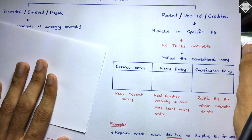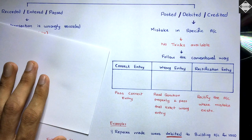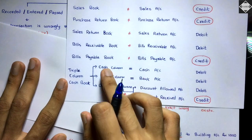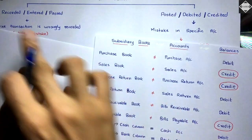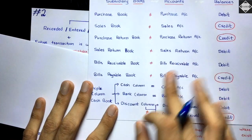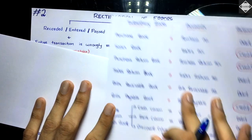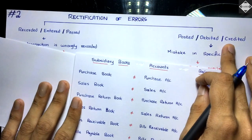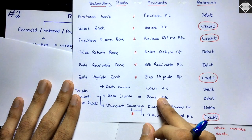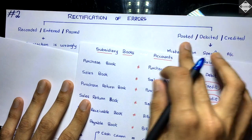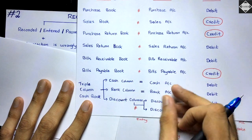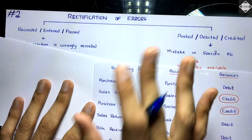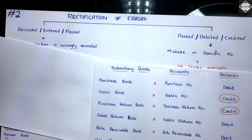Regarding the cash book: since the cash column equals the cash account and the bank column equals the bank account, the terms 'recorded', 'entered', 'passed' can also be used for cash book entries. Similarly, 'posted', 'debited', 'credited' also apply to the cash book. Both sets of terms can be used for the cash book. We'll solve questions with those errors too — it's not difficult, so don't worry.